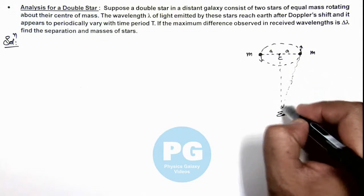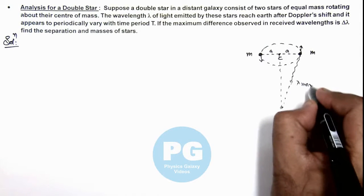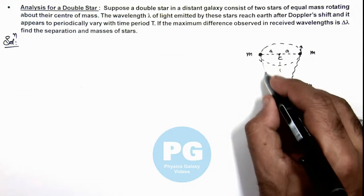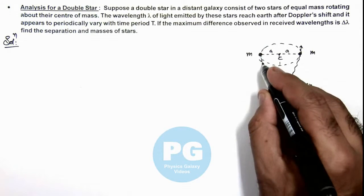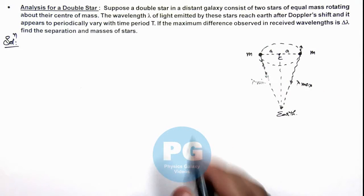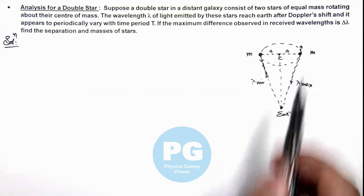When the star is moving away from earth, the wavelength received from this star will be the maximum wavelength. And the one which is directly approaching the earth will be the one from which the wavelength is minimum. At all other positions the wavelength would be between λ_min and λ_max.